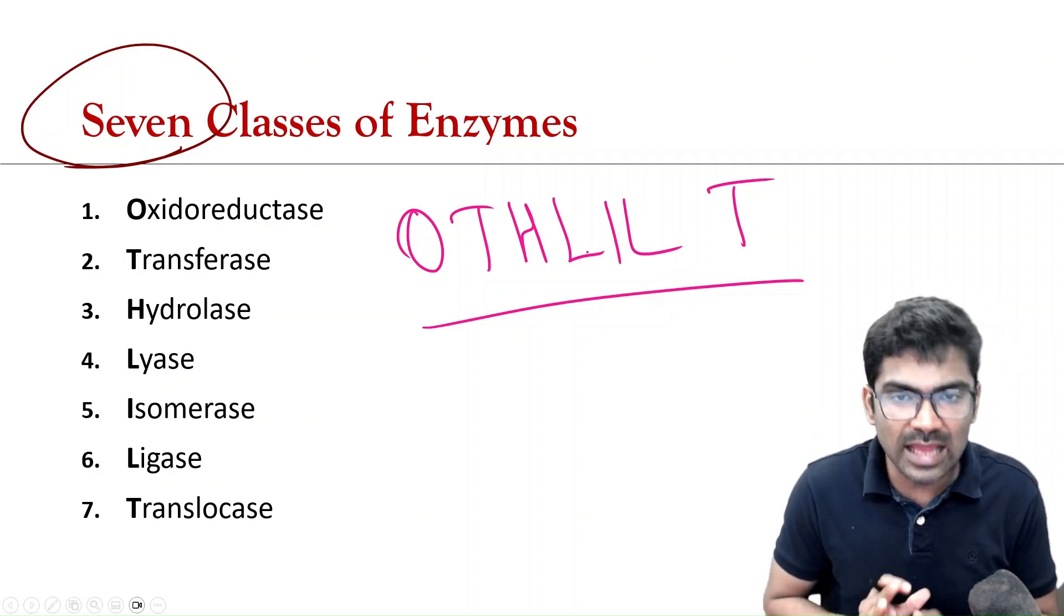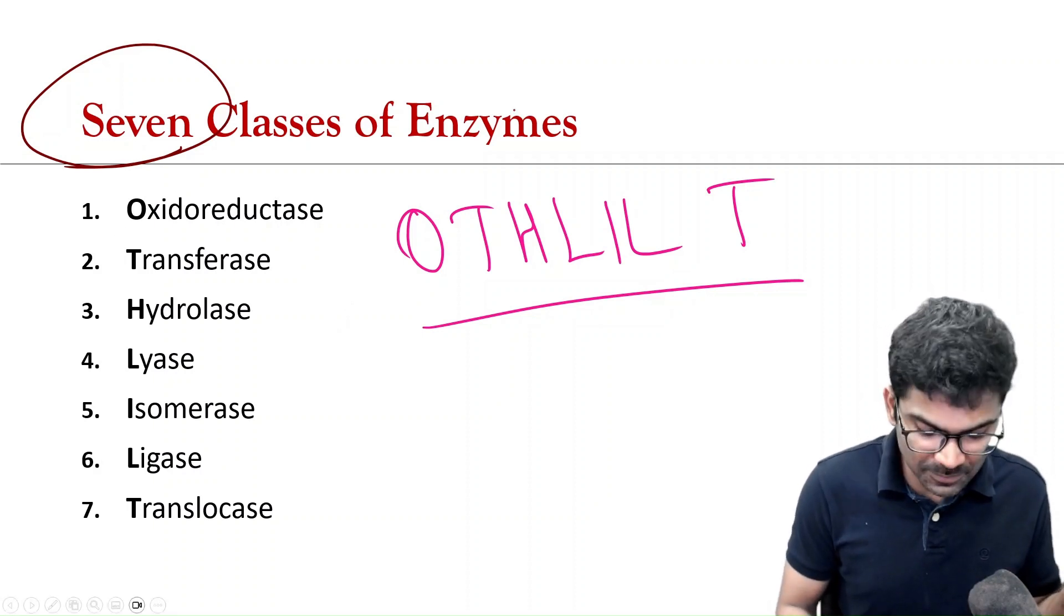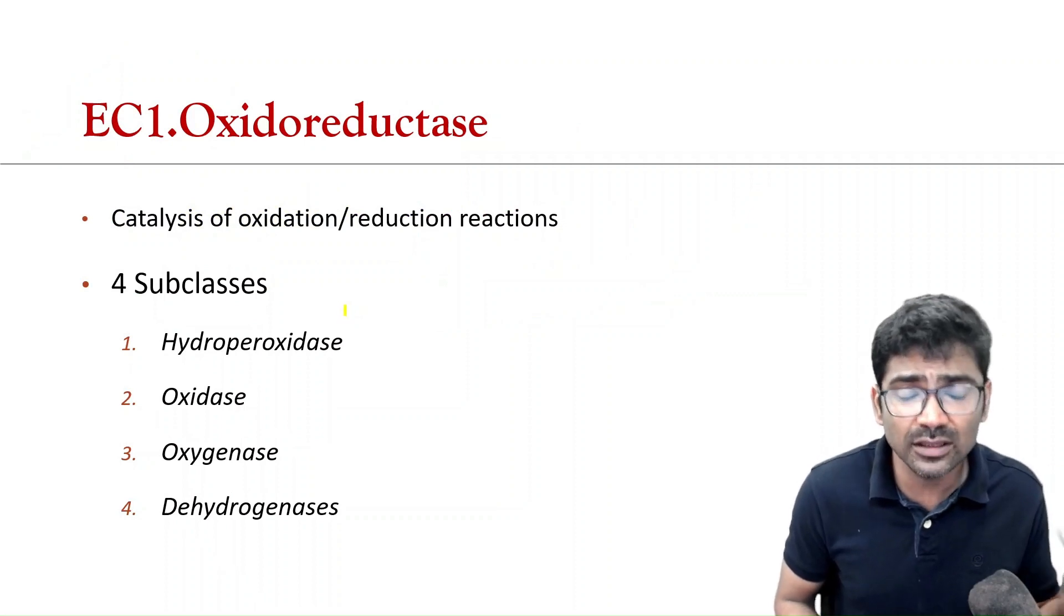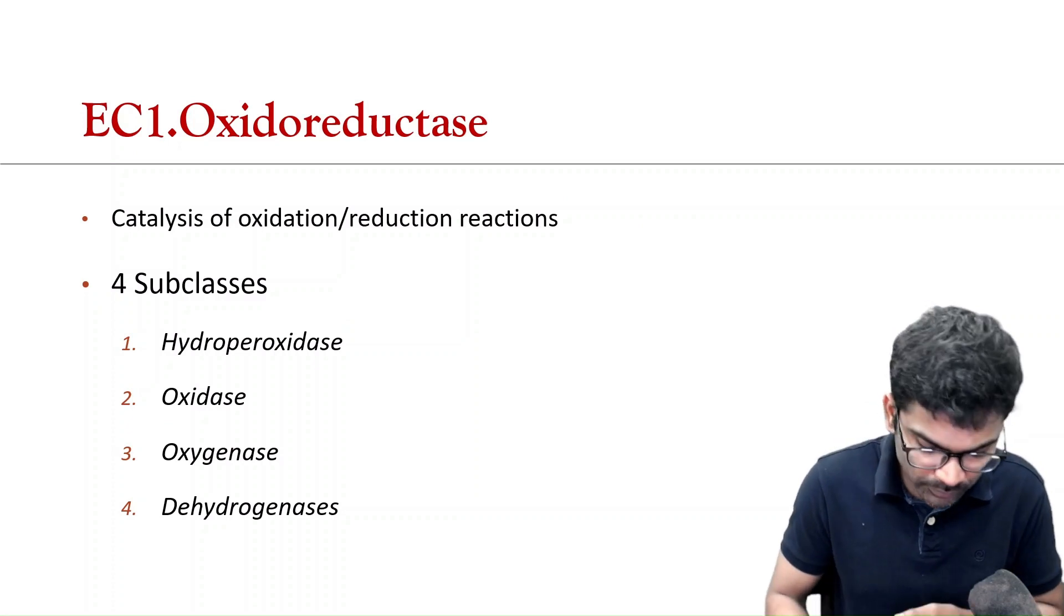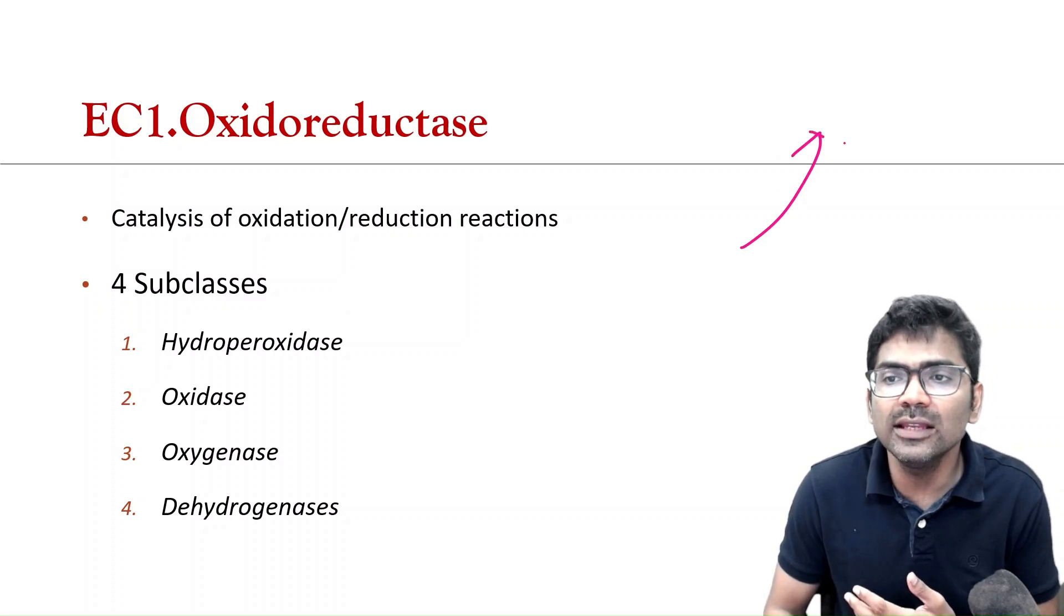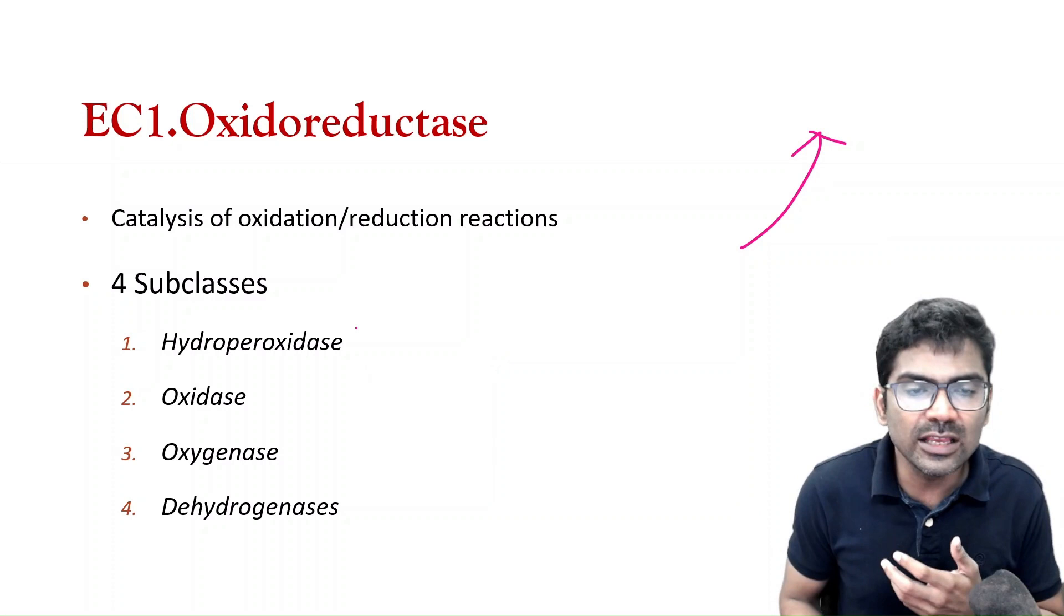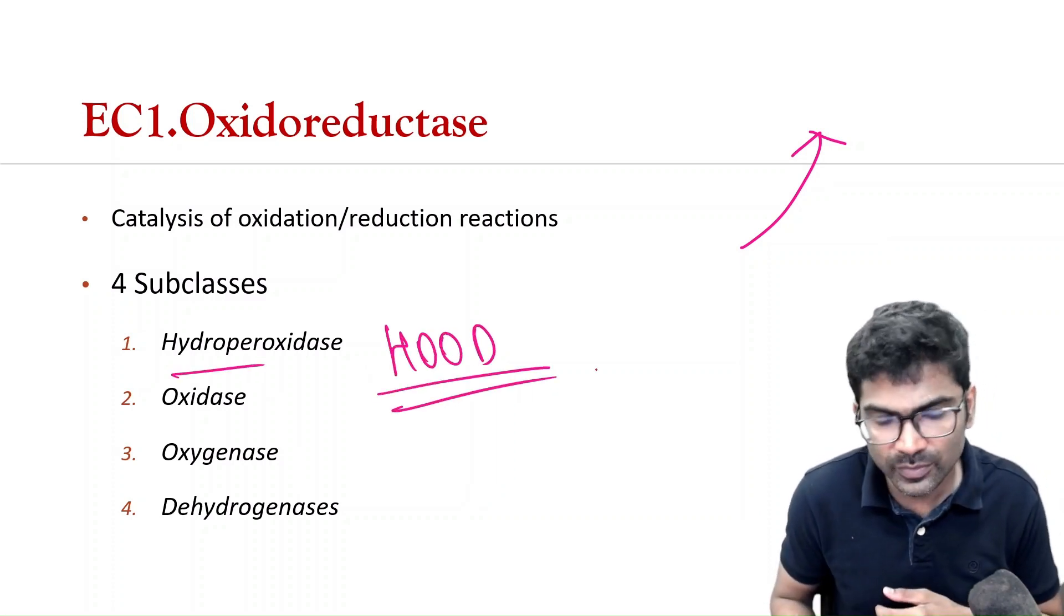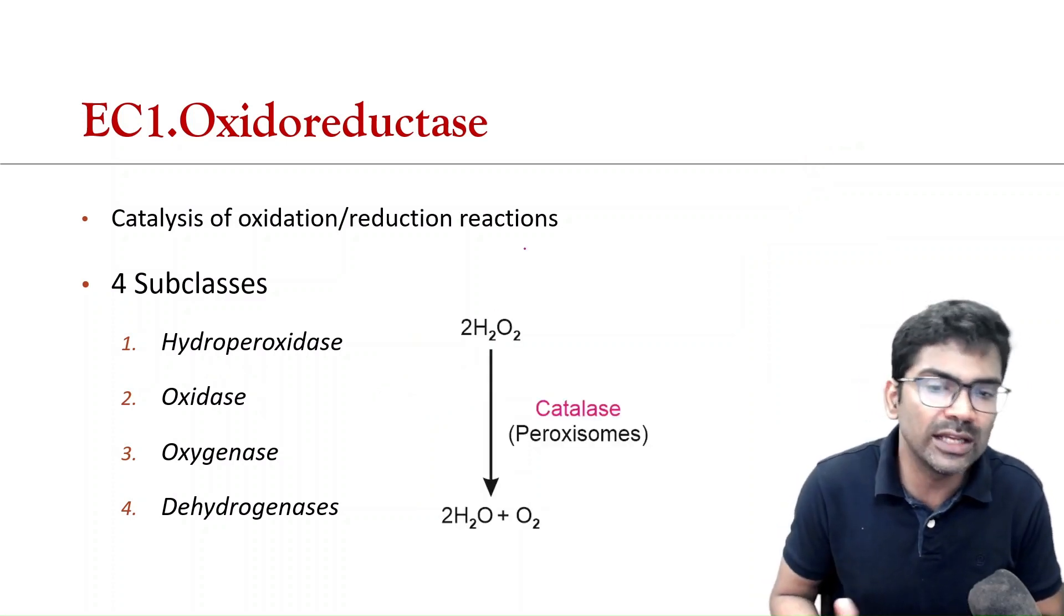We will discuss each class briefly. So, the first class of enzymes, we have already learned that is oxidoreductase. So, these are the enzymes that catalyze biological oxidation reactions. So, in a video, we have already discussed biological oxidation in detail. In that video, I have already explained the four subclasses. The mnemonic for that is FOOD. So, I have given the example for oxidoreductase.